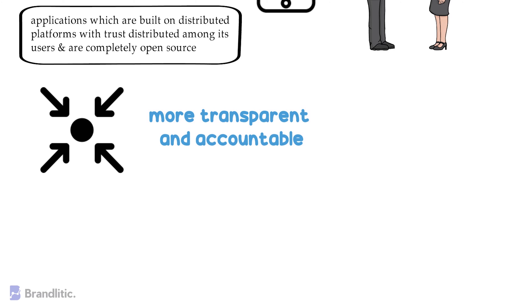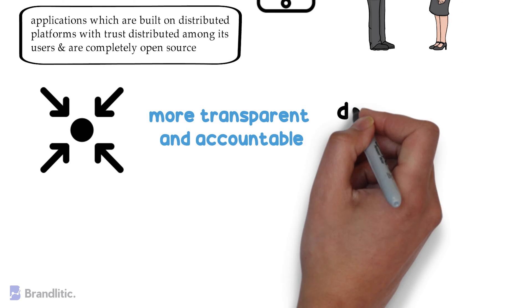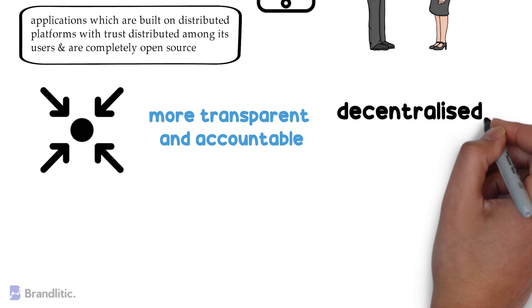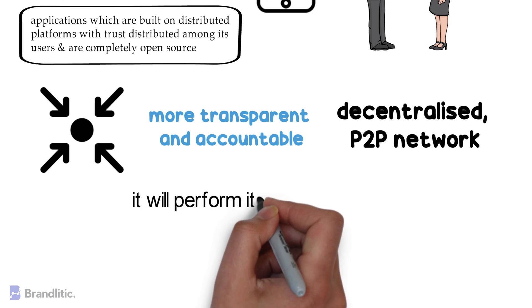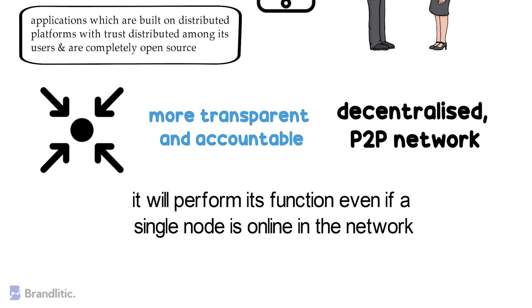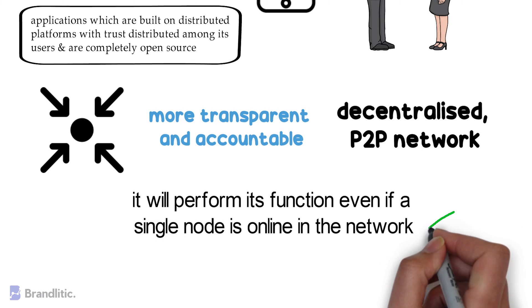Simply because a traditional app runs on a single network of computers and a DAP runs on top of a decentralized peer-to-peer network of which no single entity has complete control, it will perform its function even if a single node is online in the network.